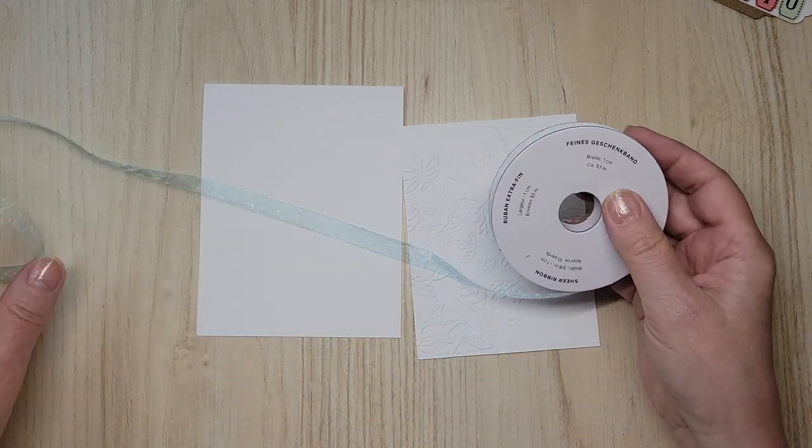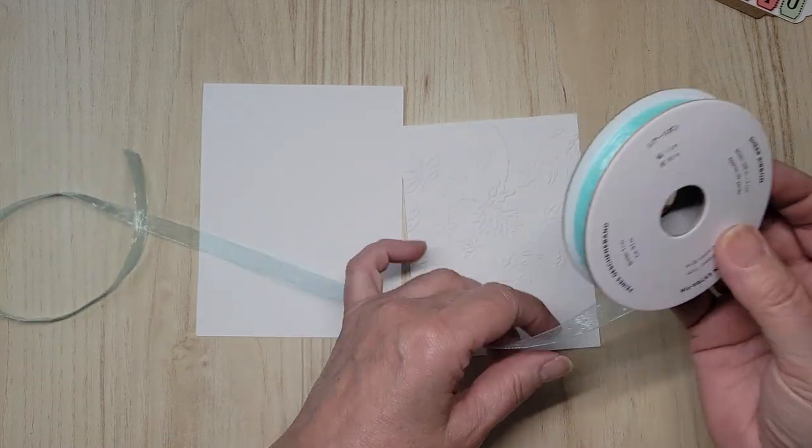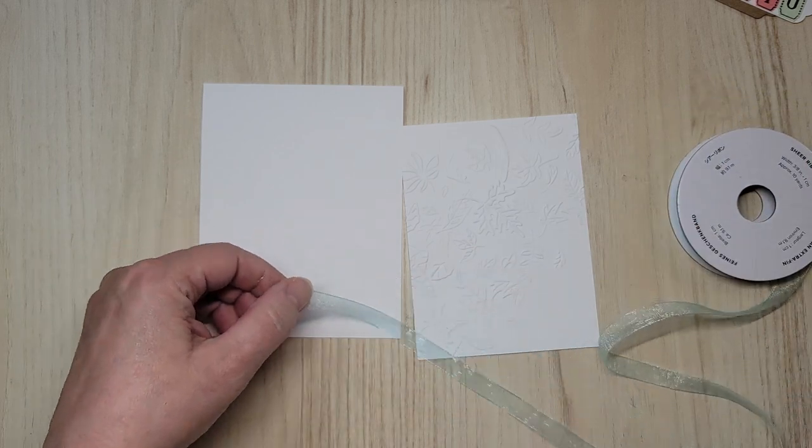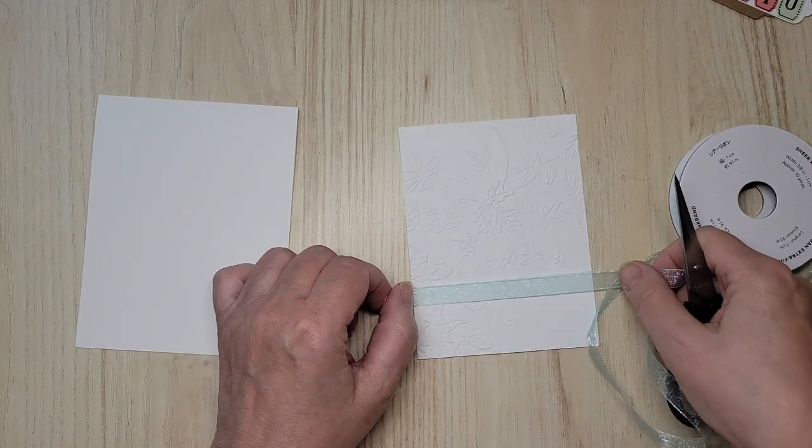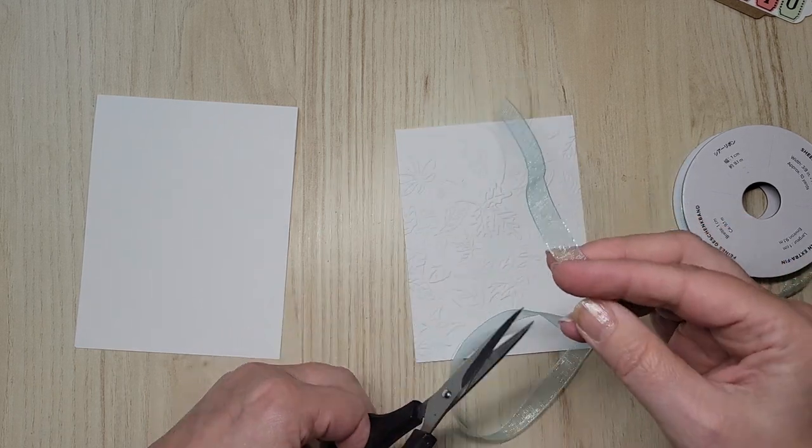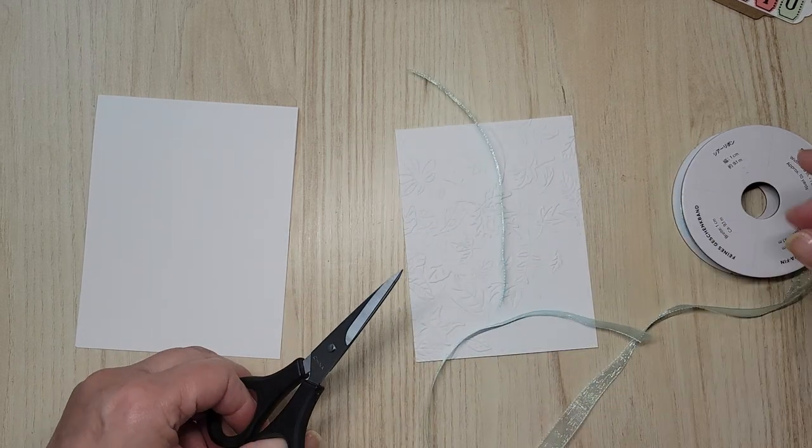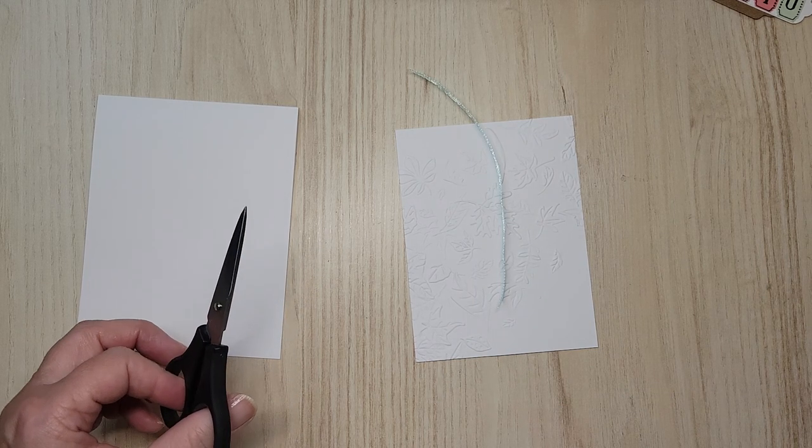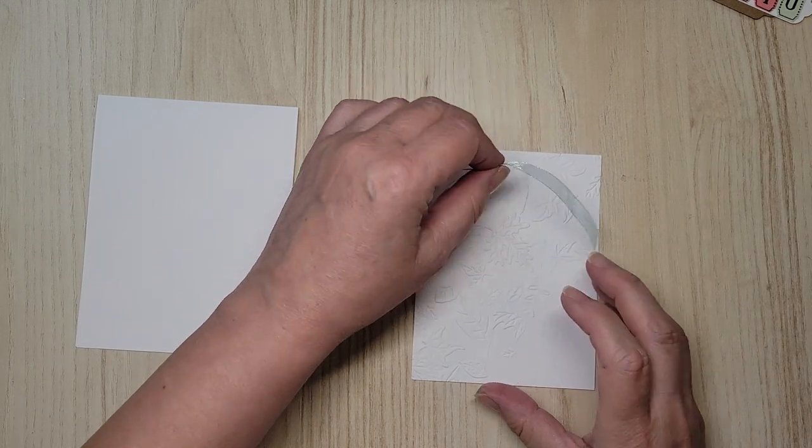So I'm going to bring in my pool party sheer ribbon. And all I want to do is I'm going to take a piece and just go straight across. And I'm going to tuck it in behind it. That's why I'm glad I didn't glue it first. I have been known to glue first and think later.